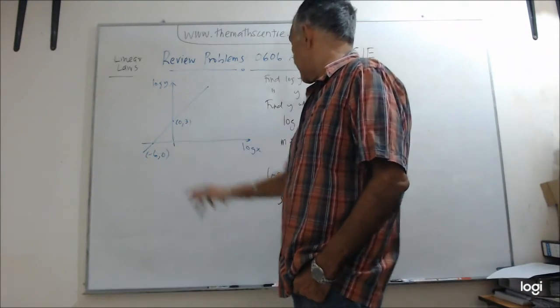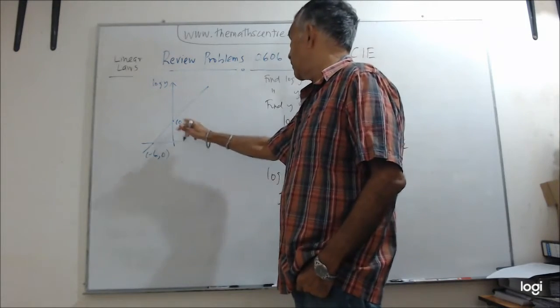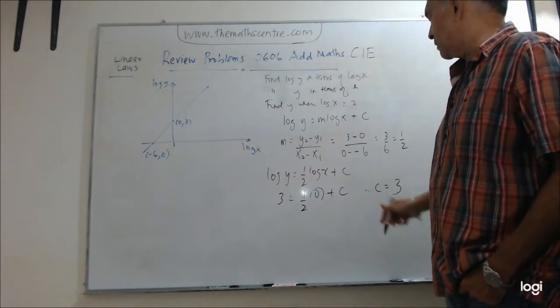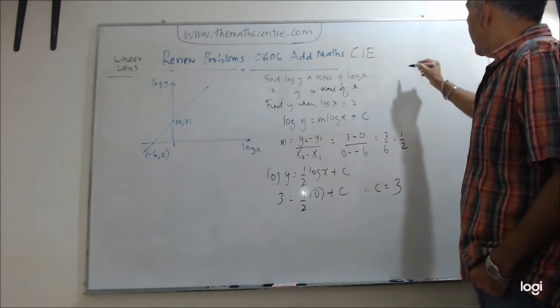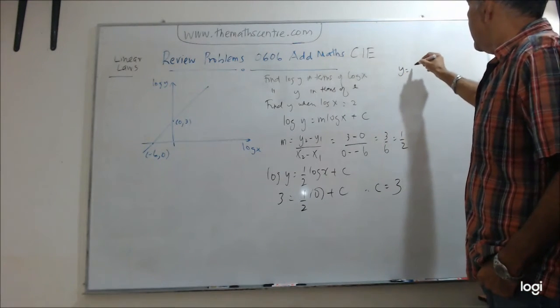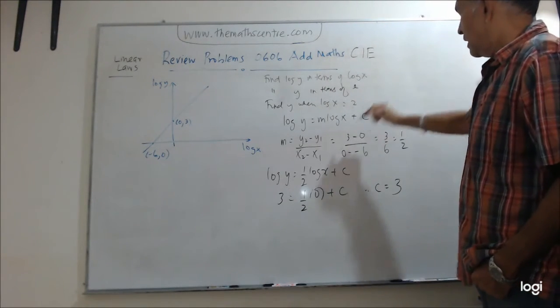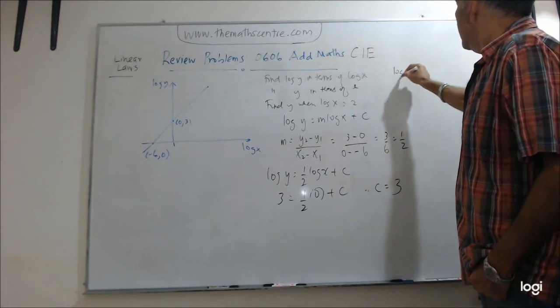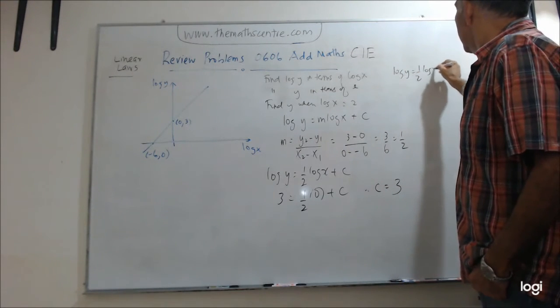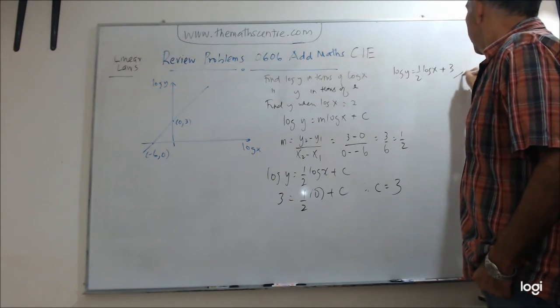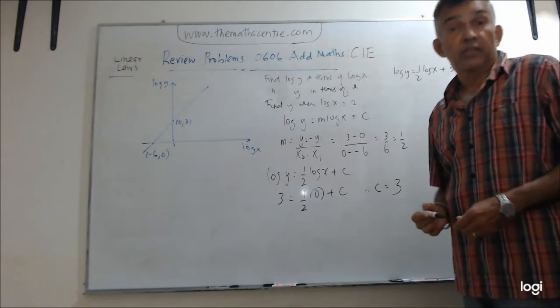Okay? So I repeat, this is the value of log x. This is the value of log y. Just plug in, yeah? Just plug in, clean that up a little bit, and then we will get our final answer. Let me write it here. y equals, excuse me, log y will be equals to a half log x plus 3. And we are done with the first part.